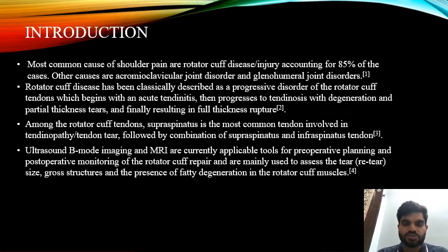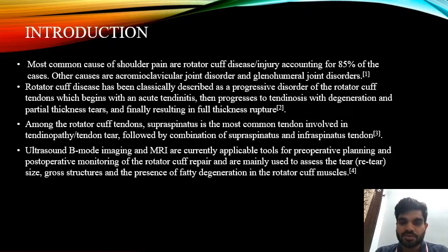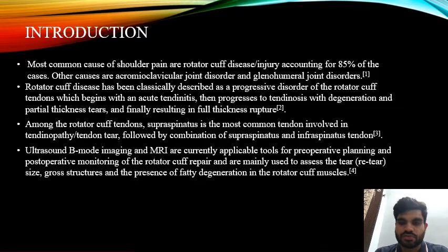Among the rotator cuff tendons, supraspinatus is the most common tendon involved in tendinopathy or tendon tear, followed by a combination of supraspinatus and infraspinatus tendon. Ultrasound B-mode imaging and MRI are currently applicable tools for pre-operative planning and post-operative monitoring of the rotator cuff repair, and are mainly used to assess the tear size, gross structures, and the presence of fatty degeneration in the rotator muscles.